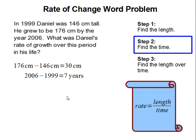Step two, find the time. We are going to find the difference between 2006 and 1999. Seven years have passed between then.